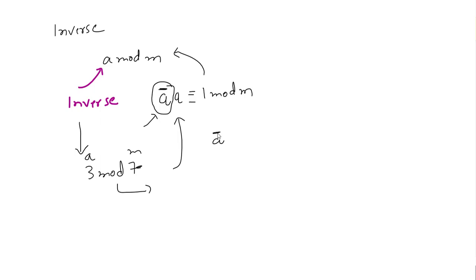...a complement is unknown, so a inverse times 3 is congruent to 1 mod 7. So any value that satisfies this criteria will be the inverse.